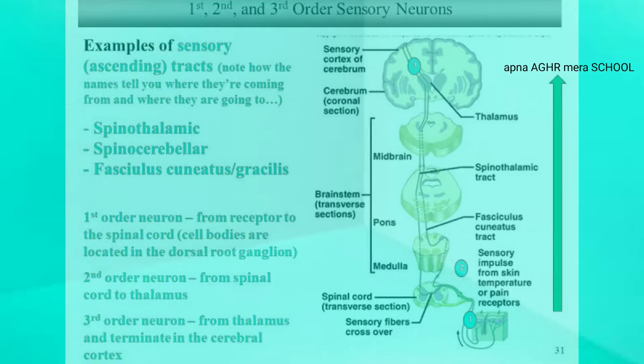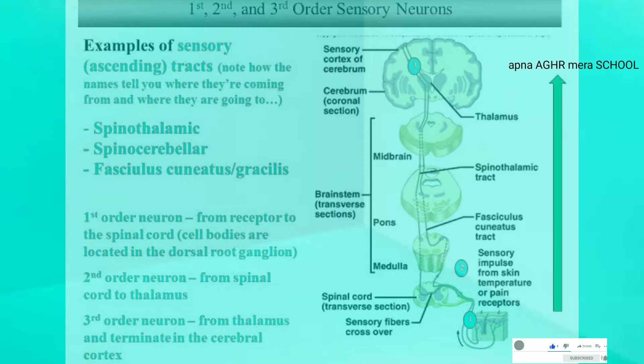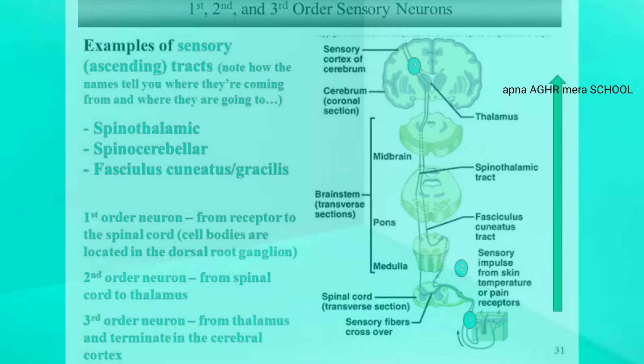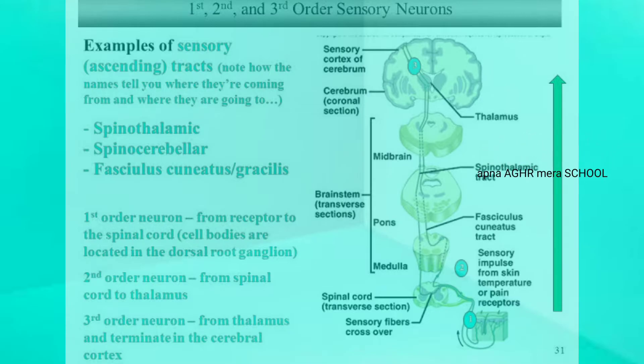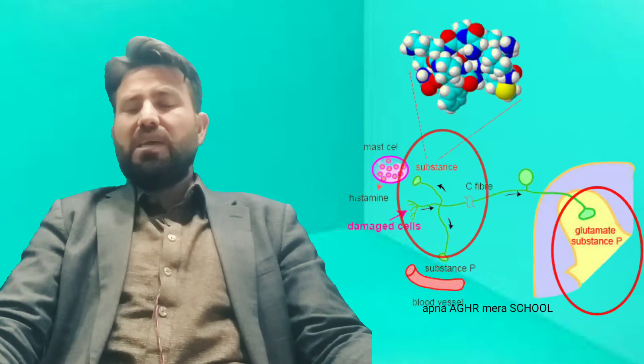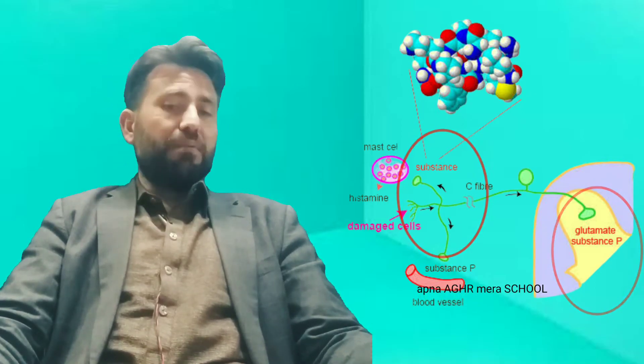The first order neuron carries the impulse from the injured hand to the spinal cord. From the spinal cord, the second order neuron carries this impulse to the thalamus. From the thalamus, the third order neuron carries this impulse to the cortex of the brain. Two types of neurotransmitters help in the transmission of this impulse to the brain: one is glutamate and the other is substance P.